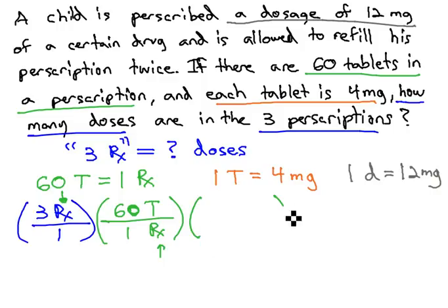However, we still need another conversion factor, because all we've done is gotten rid of the prescriptions, and the question's not asking about tablets, it's asking about dosage. To get rid of the tablets, which are in the numerator, we need to put them in the denominator. What can we change a tablet into? We're told that one tablet is 4 milligrams. We can change it to milligrams, 4 milligrams in one tablet. We now can divide out the tablets, and we now know how many milligrams we have.